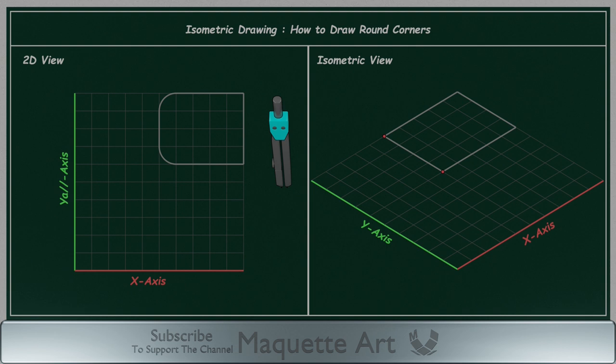Now for this corner, we will measure 1 cm of the round radius on both axes. Now using the method I just explained, of how to draw perpendicular lines, draw two perpendicular lines at those two points. Now using the compass and this point as the center, draw an arc, like this.